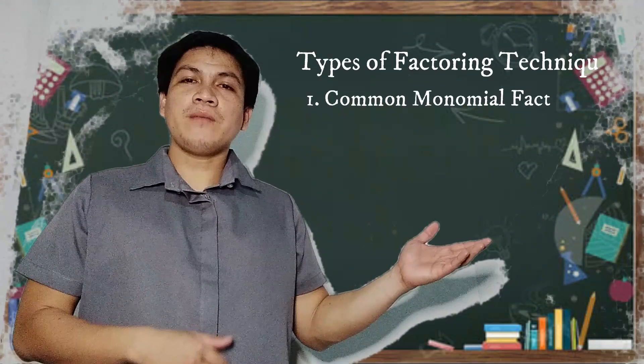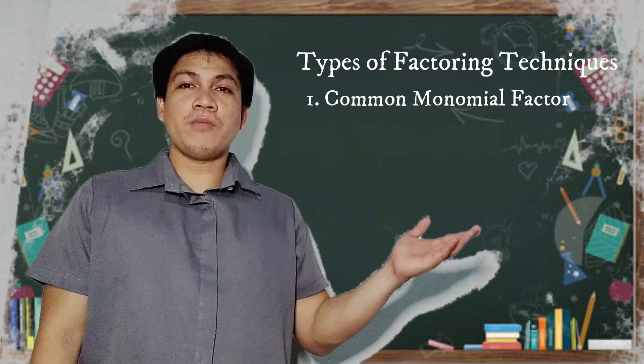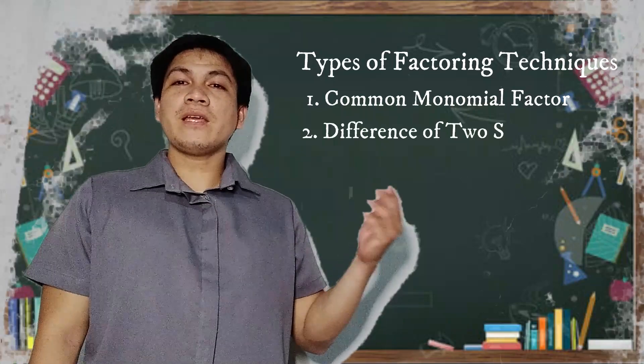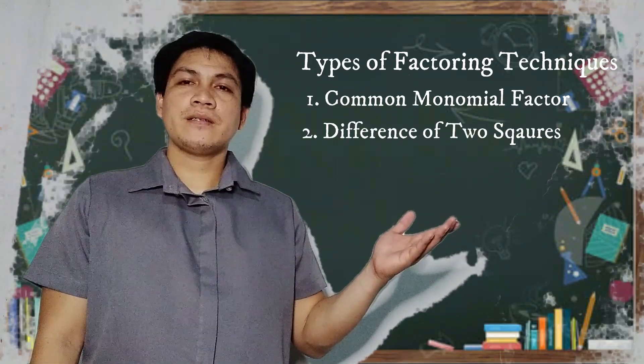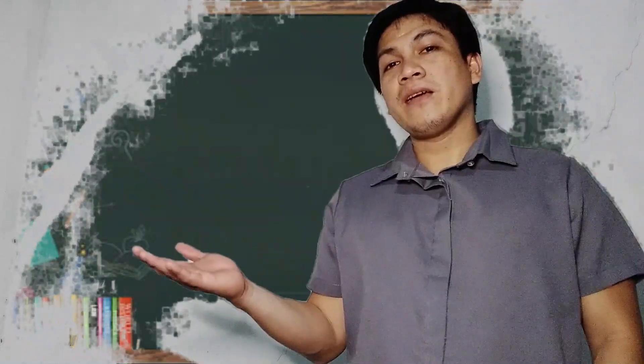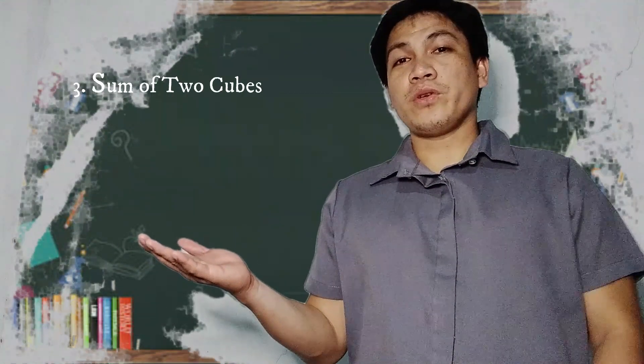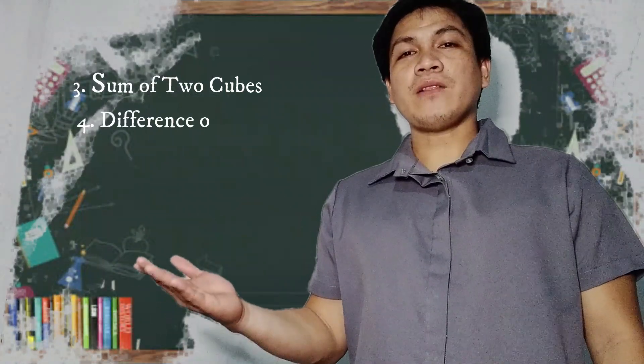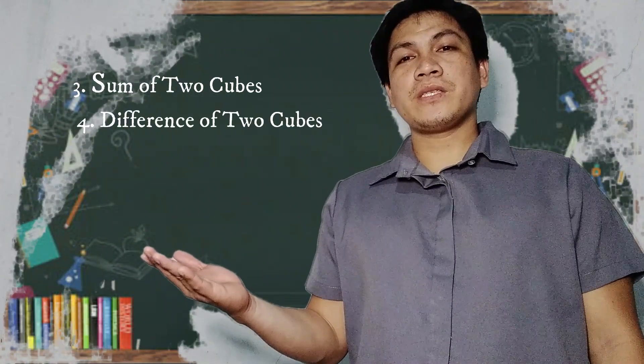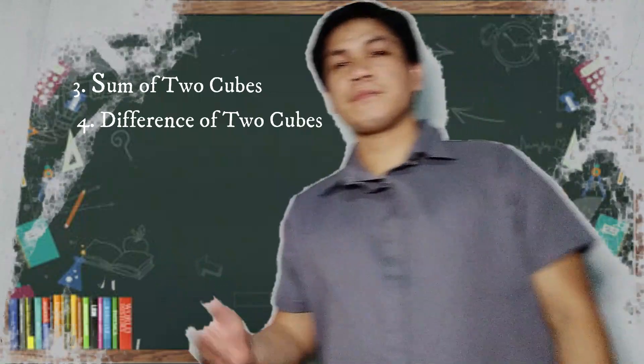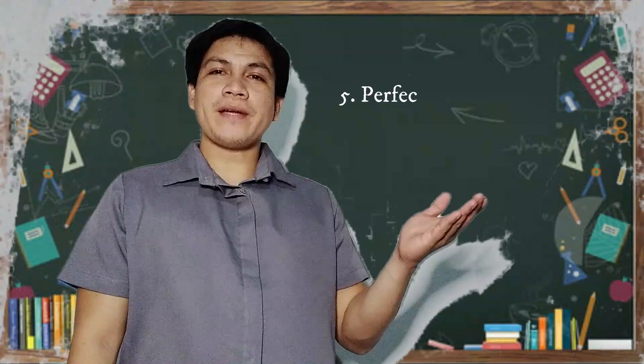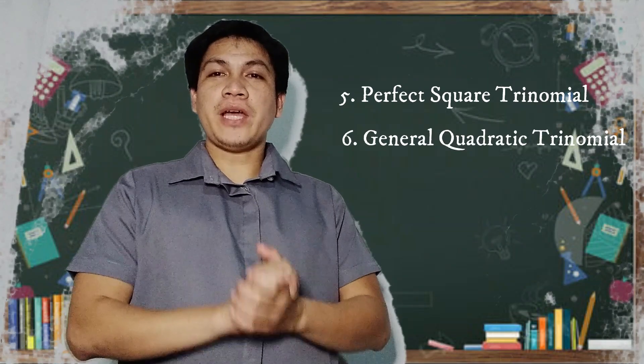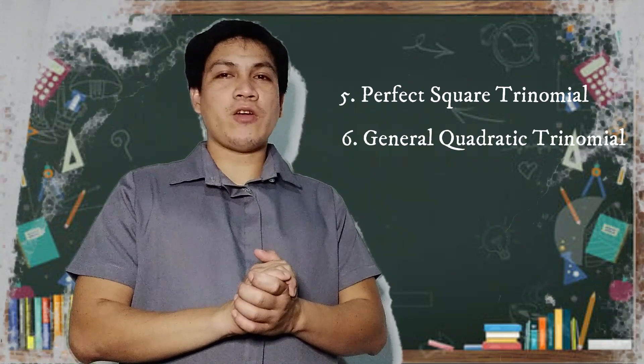Number one. Factoring polynomials using common monomial factor. Number two. Factoring the difference of two squares. Number three. Factoring the sum of two cubes. Number four. Factoring the difference of two cubes. Factoring perfect square trinomial. And finally, factoring general quadratic trinomial.